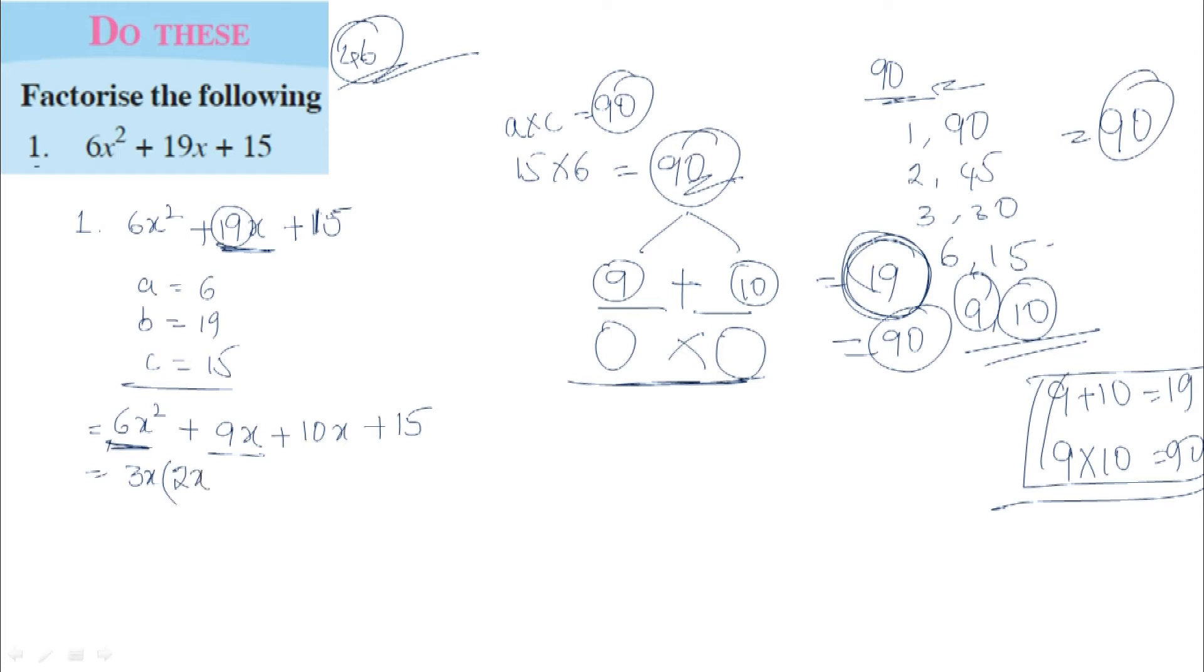3x into 2x is 6x², plus 3x into 3 is 9x. So 3x common gives us 2x + 3. Plus, from the last 2 terms, 5 is common. 2x times 5 is 10x, plus 3 times 5 is 15.